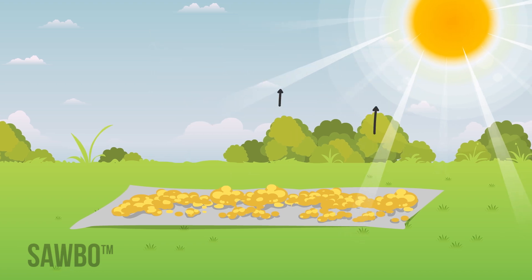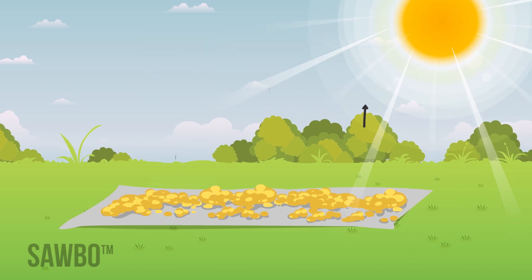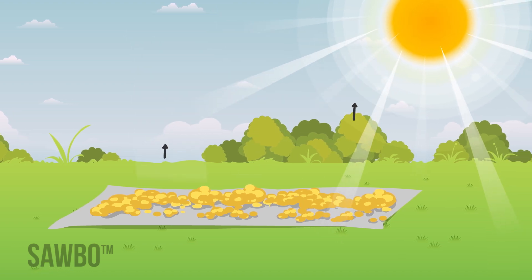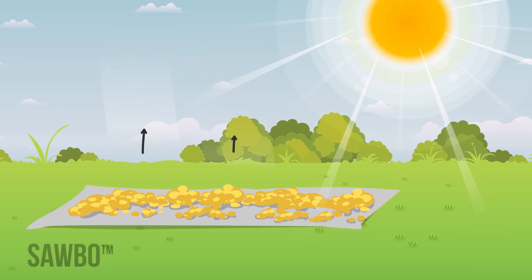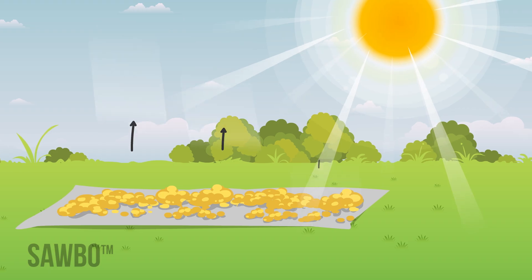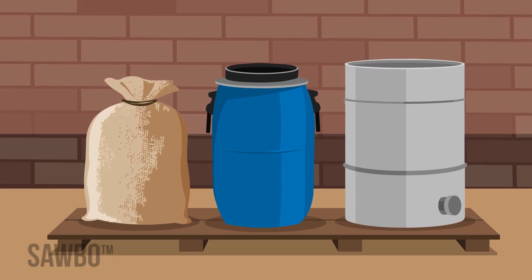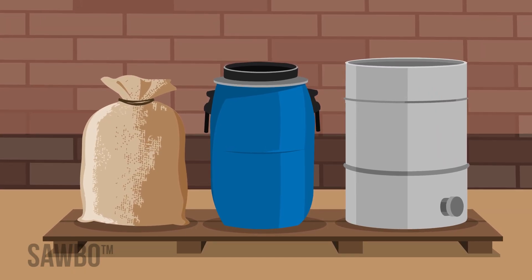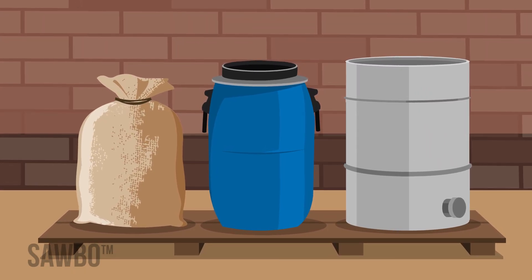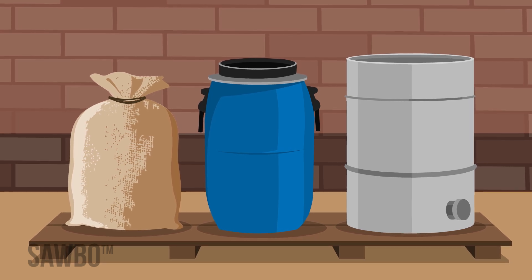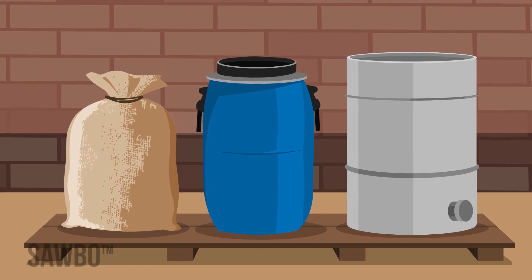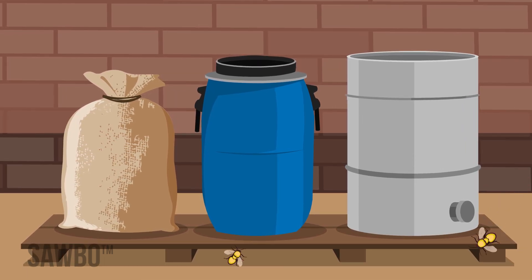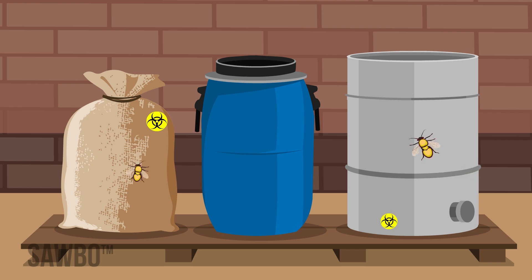Grains or nuts should be dried before storage to reduce moisture content and prevent mold growth. During storage, it is important to keep conditions clean by placing the grain, nuts, or fruit in closed containers. This will help prevent pest access, decreasing the chances of mold growth and mycotoxin contamination.